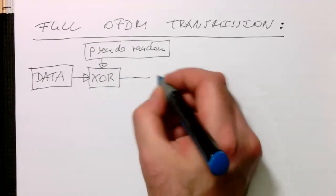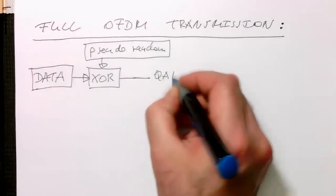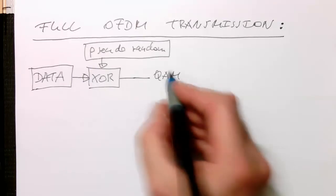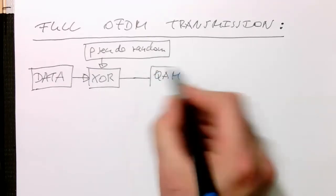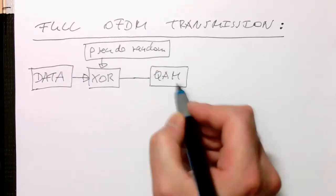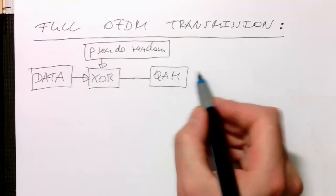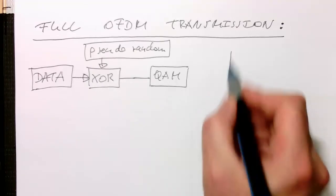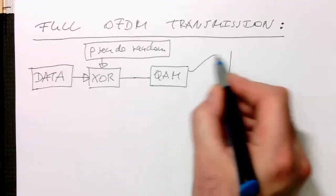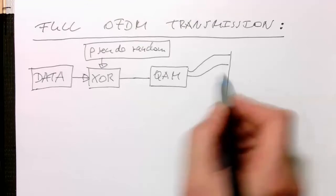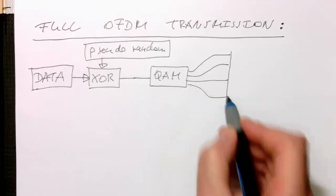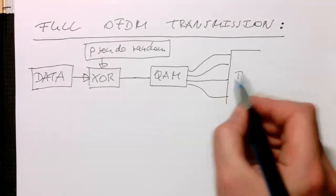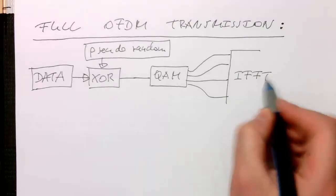After that, we are using some kind of QAM coding on the data. These different QAM-coded signals then go into our IFFT. That's our IFFT block here.